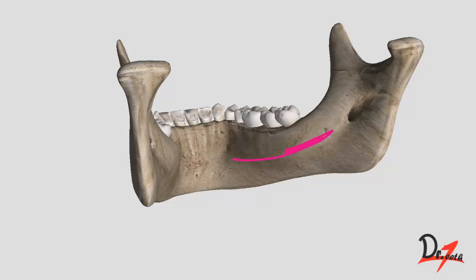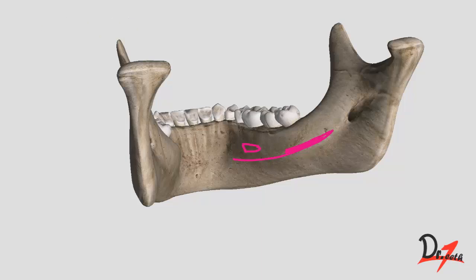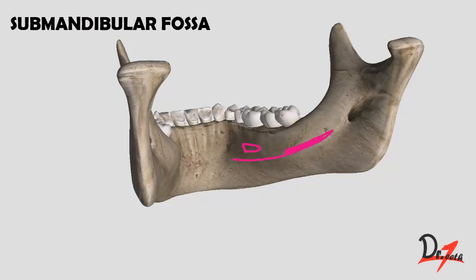The mylohyoid line divides the inner surface into two parts. The upper part presents with a triangular fossa in the anterior part called the sublingual fossa, which is related to the sublingual gland. The lower part presents with a gentle concavity known as the submandibular fossa.